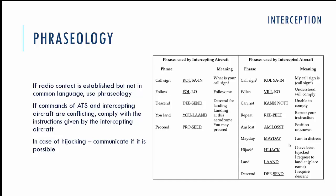Let's talk about the phraseology. It's quite simple. In case you are not able to communicate in a common language with the intercepting aircraft, you use this phraseology table. Phrases used by the intercepting aircraft include: call sign, follow, descend, you, land, proceed. Phrases used by the intercepted aircraft include: call sign, will comply, cannot, repeat, I'm lost, mayday, hijack, land, descend. If instructions from ATS and the intercepting aircraft conflict, you must comply with the instructions given by the intercepting aircraft. In case of hijacking, communicate if possible.